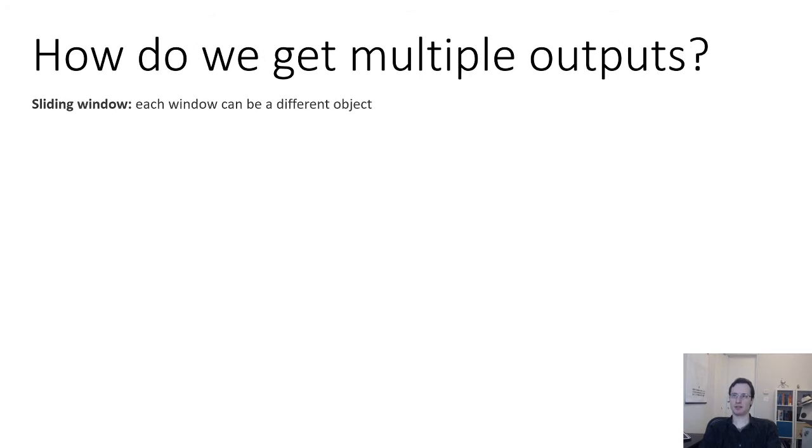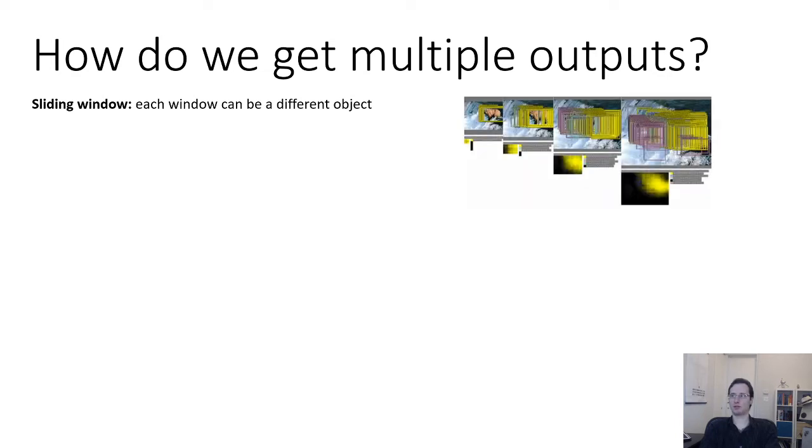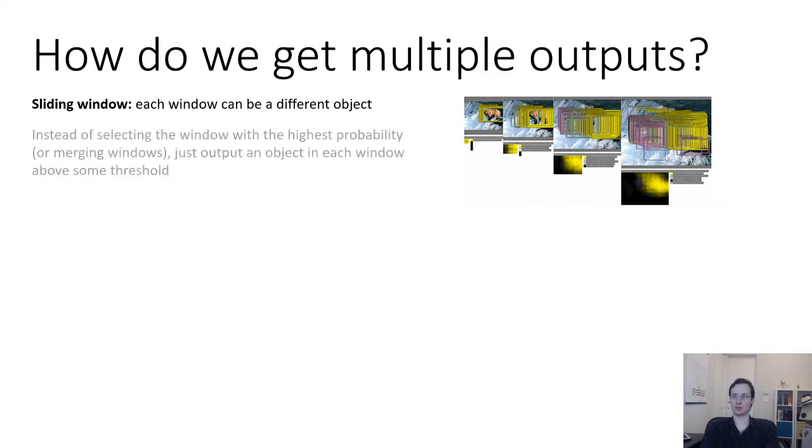All right, well one thing we could observe is that if we use a sliding window approach, each window can actually be a different object. So just like in the previous section we saw how overfeat outputs classifications at every position in the image, instead of selecting the window with just the highest probability or merging the windows, we could just output an object in each window where the probability of some class is above some threshold.